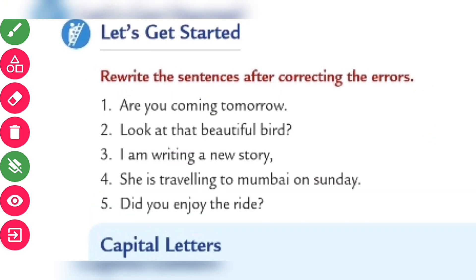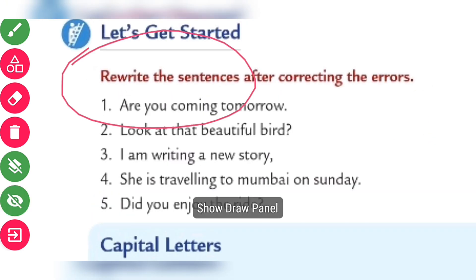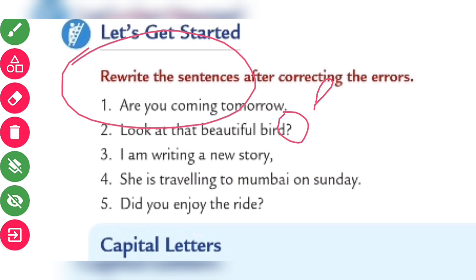Are you coming tomorrow? — that is an interrogative question, so the interrogative mark should be used. Look at the beautiful bird. The interrogative mark — you know that is wrong. I am reading a new story — full stop. Nature — comma. Unity — full stop. Energy. She is traveling to Mumbai on Sunday, so Mumbai should be in capital letter M, and Sunday also capital letter.